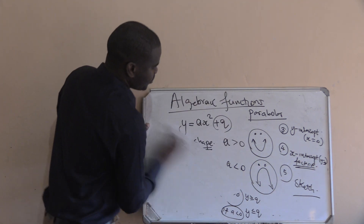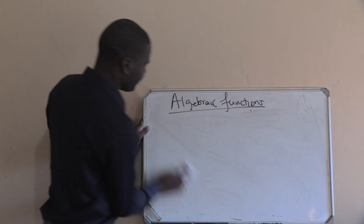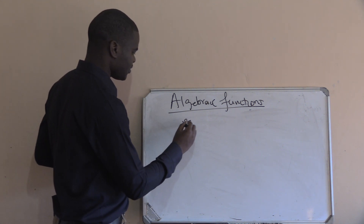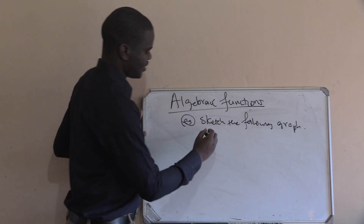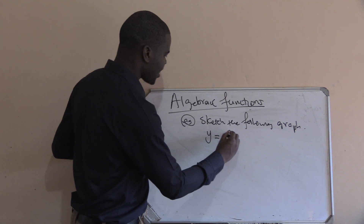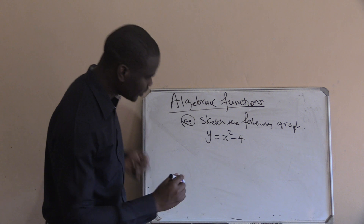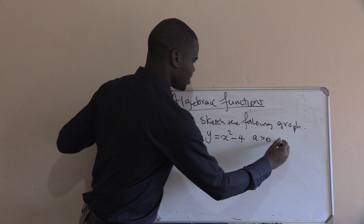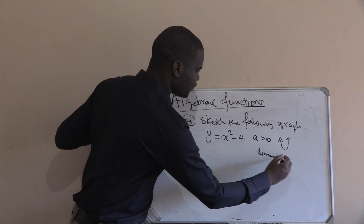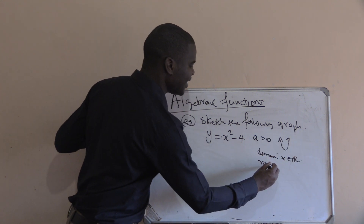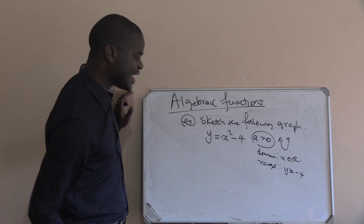Let's look at the example. Sketch the following graph: y is equal to x squared minus four. The first thing — know the shape. Your a is greater than zero because a is one, so you expect a smiley shape. The domain is x is an element of all real numbers. The range, since a is greater than zero, is y greater or equal to minus four.